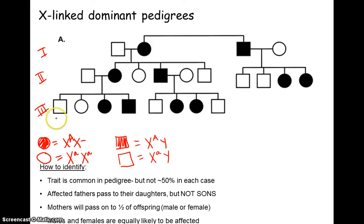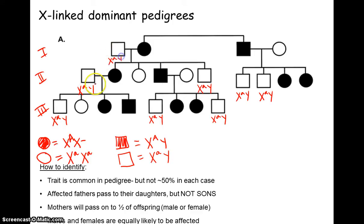The males are the easiest to start with since they only have two options. As you do these, you have to identify the mode of inheritance first, because what you write depends on it. Unaffected males are X little a, Y, and affected males are X capital A, Y. Once all males are filled in, we move on to the females.